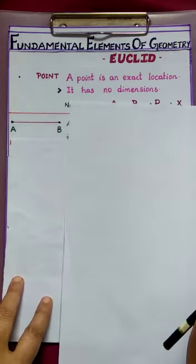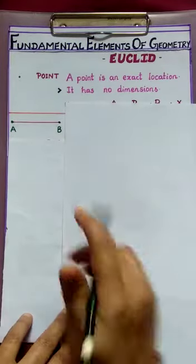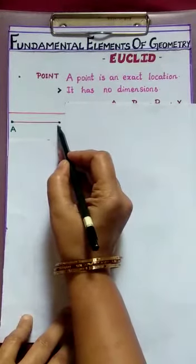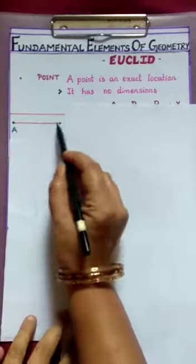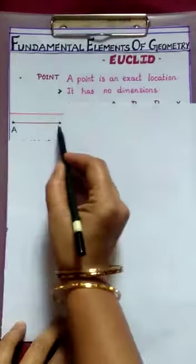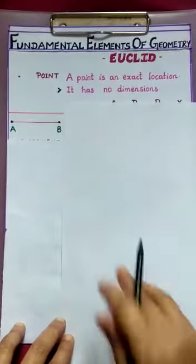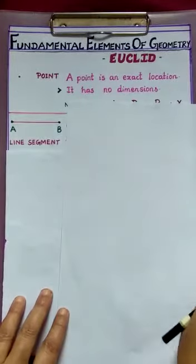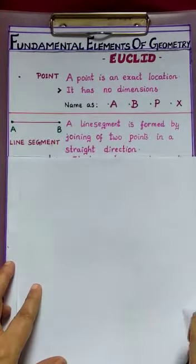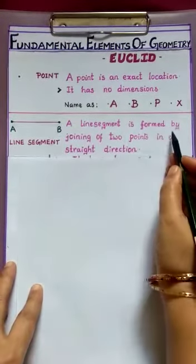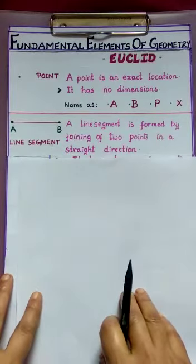Now, here you observe. Here, I joined two points using a straight path. So what is the distance between the two points called? The distance between two points including the end points is called a line segment. So a line segment is formed by joining any two points in a straight direction.